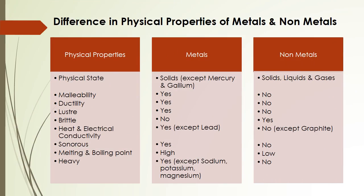Comparing metals and nonmetals: metals are malleable, nonmetals are not. Metals are ductile, nonmetals are not. Metals have luster, nonmetals don't. Metals are not brittle but nonmetals are. Metals have good conductivity of heat and electricity, nonmetals don't. Exceptions include lead (not a great conductor) among metals, and graphite (a good conductor) among nonmetals.